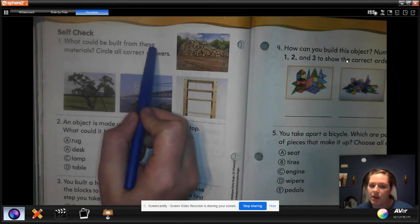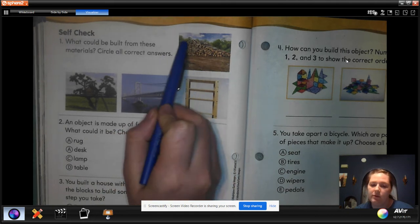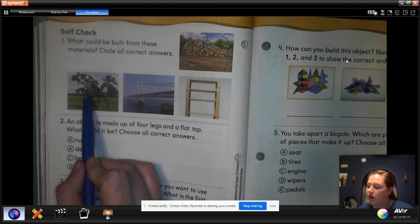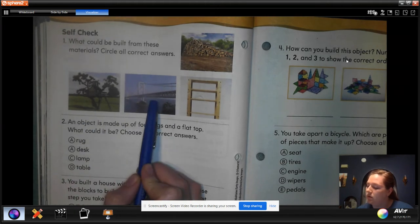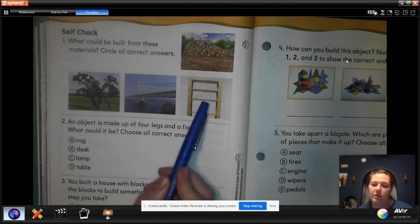What could be built from these materials? Circle all correct answers. So here's a big pile of wood. What could they build from this pile? A tree house? A bridge? A ladder? Circle all correct so it could be more than one.